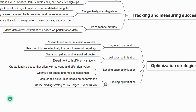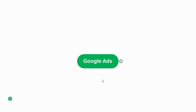The last optimization strategy is bidding optimization — monitor and adjust bids based on performance, and utilize bidding strategies like target CPA (cost per acquisition) or ROAS (return on ad spend). For example, if you spent 7000 rupees on an ad and generated 9000 rupees in revenue, your return on ad spend is 2000 rupees. This was the theoretical part of Google Ads — in upcoming videos, we will learn it practically.